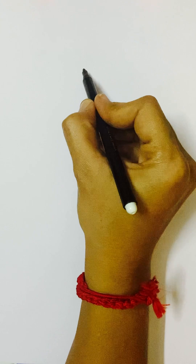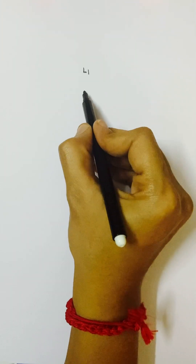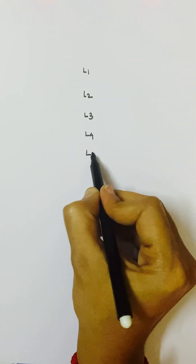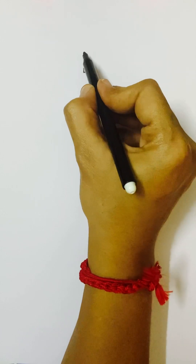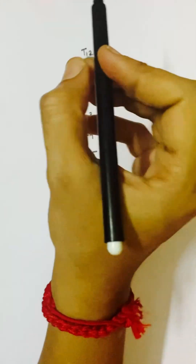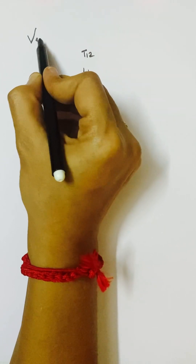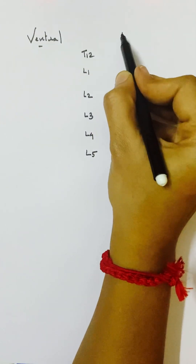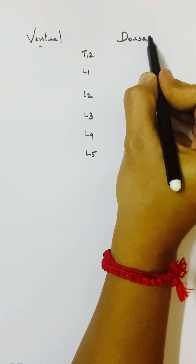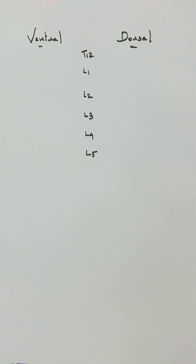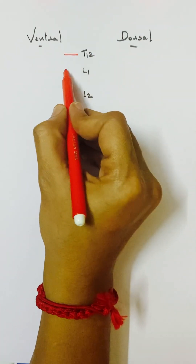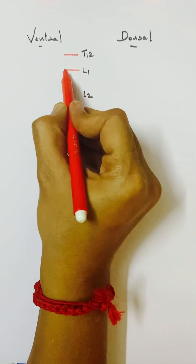Let's discuss the lumbosacral plexus. Its formation starts from L1, L2, L3, L4, L5, and we can also include the last thoracic nerve T12. We divide the branches raised ventrally and dorsally — on one side we have ventral rami and on the right side we have dorsal rami branches. From T12 we have one branch, and from L1 we have two branches.